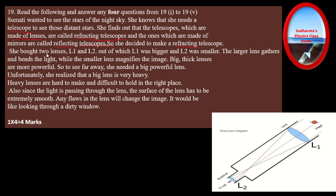She bought two lenses L1 and L2, where L1 was bigger and L2 smaller. The larger lens gathers and bends the light, while the smaller lens magnifies the image. Thick lenses are more powerful, so to see far away she needed a big, powerful lens. Unfortunately, a big lens is very heavy — heavy lenses are hard to make and difficult to hold in the right place. Also, since light passes through the lens, the surface must be extremely smooth; any flaw would be like looking through a dirty window.